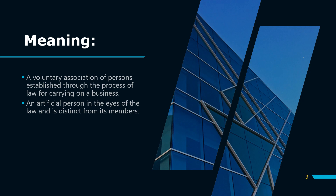Apart from that, a company is an artificial person. Artificial person ka matlab hota hai ki wo har wo cheez karta hai jo ek normal vyakti karta hai in the eyes of the law, but uski jo identity hai, woh apne members se alag hai. Therefore, in the eyes of the law, it is distinct from its members — a court ke liye company aur usse jude hue members dono alag alag log hote hain.